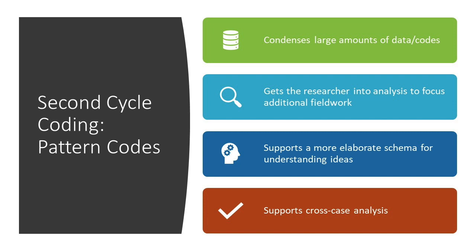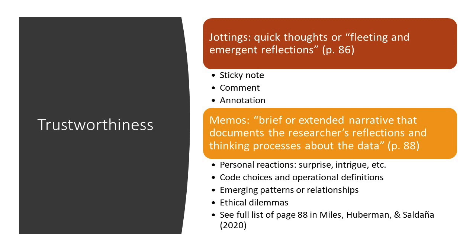The Miles, Huberman and Saldana book identifies tools for advanced analysis, including matrix displays, network displays, graphics, or narrative descriptions, which can aid in clustering first-cycle codes and seeing patterns as part of second-cycle coding. Throughout the process of coding, it is critical to note what you are doing and why you are doing it through memos and jottings. Jottings are quick thoughts — when hand coding, this could be a sticky note; in Microsoft Word, inserting a comment; and in NVivo, making an annotation. Jottings capture fleeting or emerging reflections, such as personal reactions, doubts, mental notes, reminders to find additional information, cross-references, or questions to consider. The text describes jottings as breadcrumbs or a trail for expanded memoing.